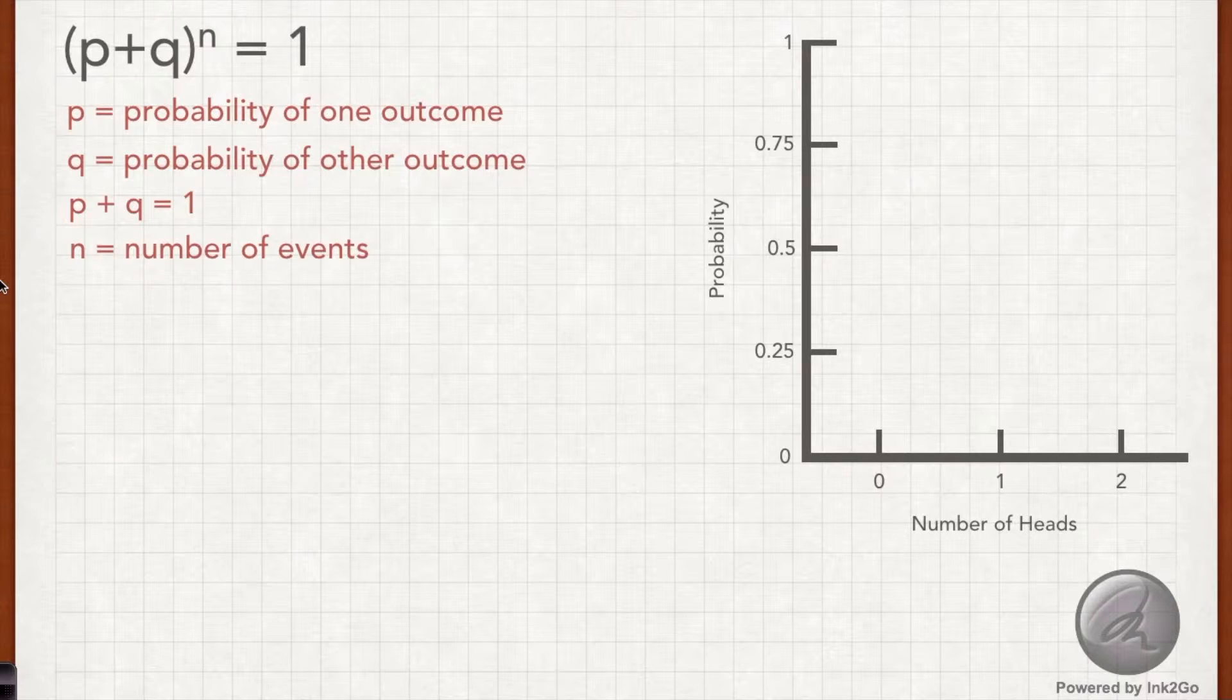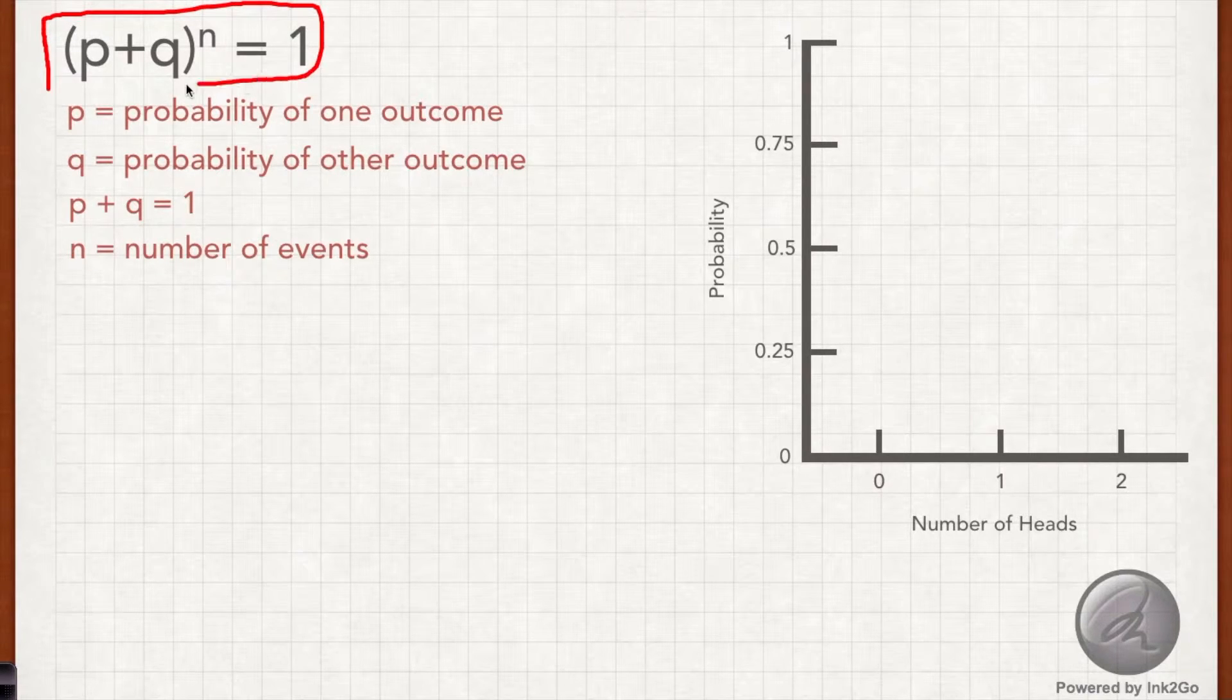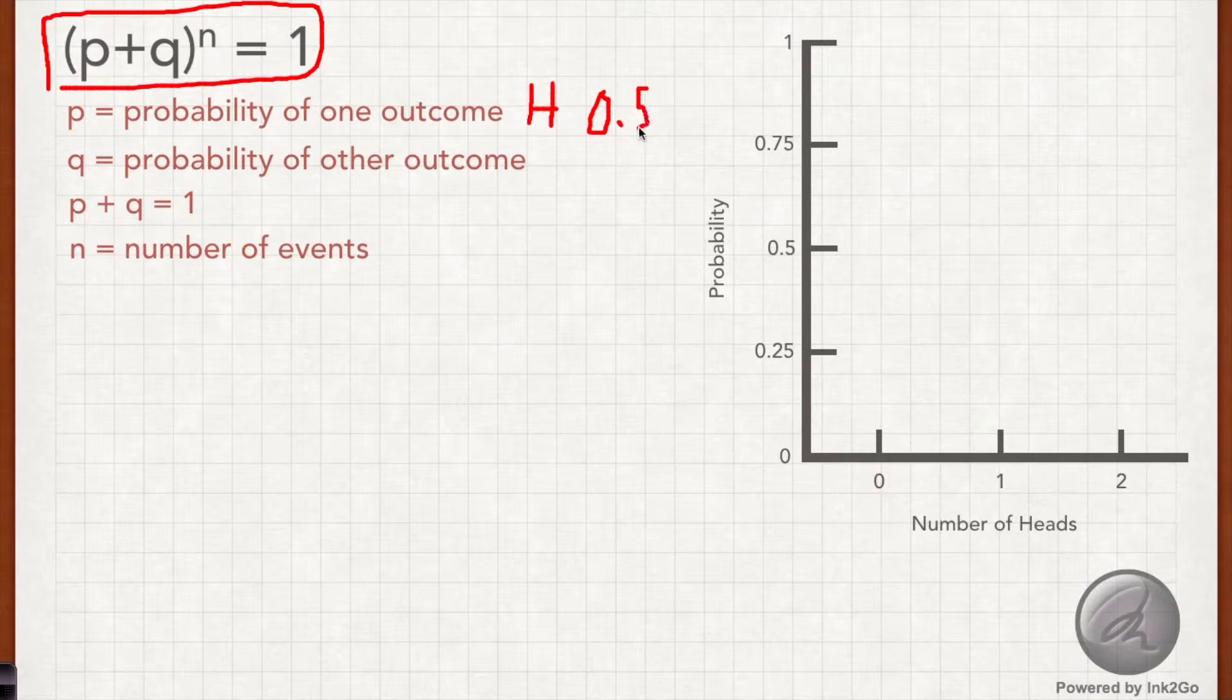It turns out there are equations we can use to find out the probabilities of each of those events. And they come from this formula right here, where P and Q are the probability of two different outcomes. I'm going to say that P is heads, and we said the likelihood of that was 50%, or 0.5. And Q is tails, which is also 50% likely.